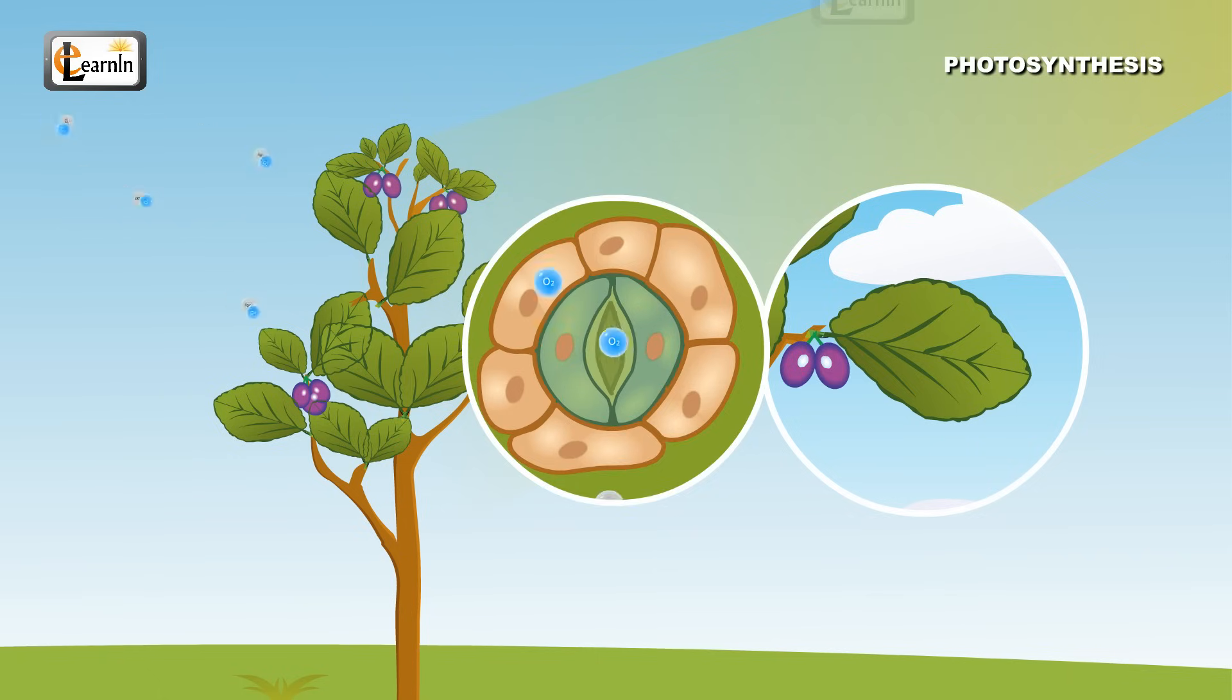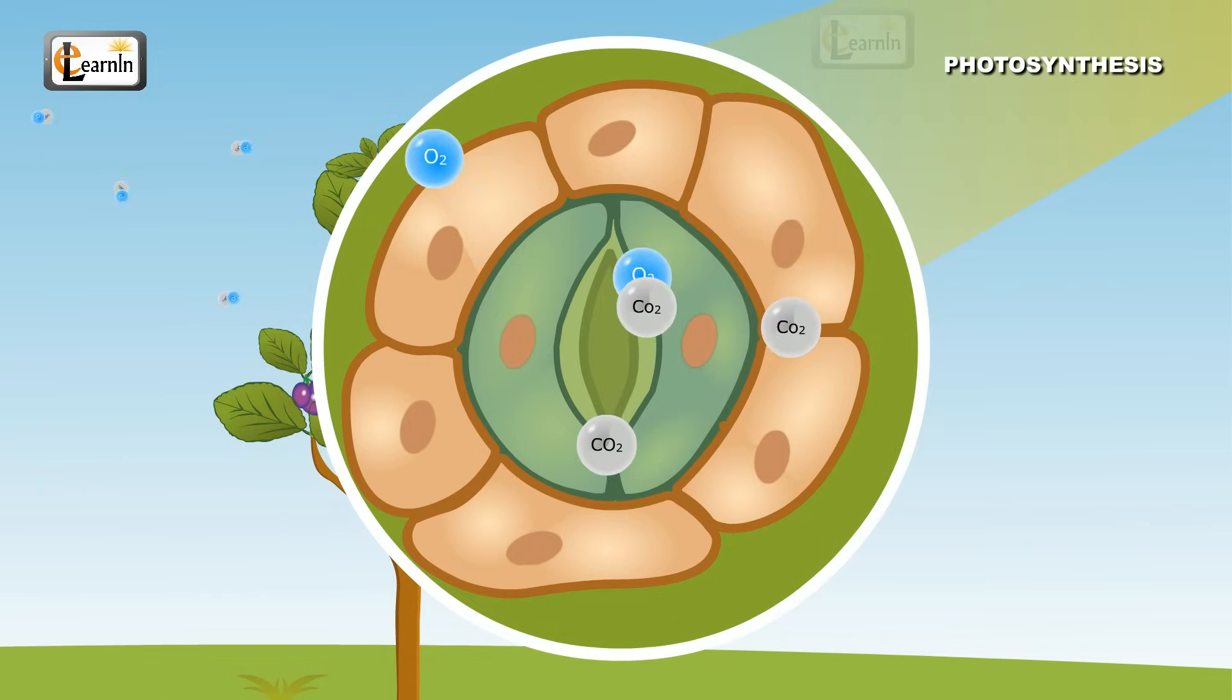These pores are called stomata. These stomata are responsible for the exchange of gases. The carbon dioxide present in the air, which is responsible for photosynthesis, enters the plant through these stomata. Oxygen also comes out through these stomata.